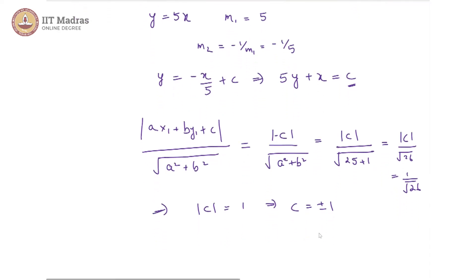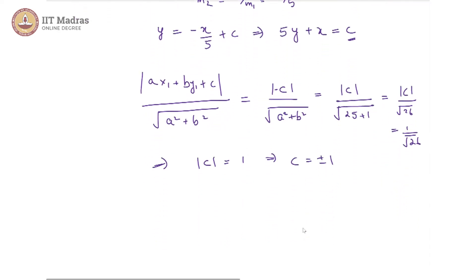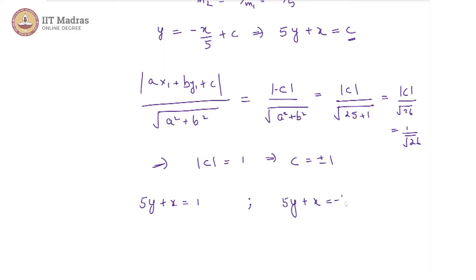So we get two answers. For c equal to plus 1, we have 5y plus x equals 1. And in the other case, we get 5y plus x equals minus 1 for the other choice.